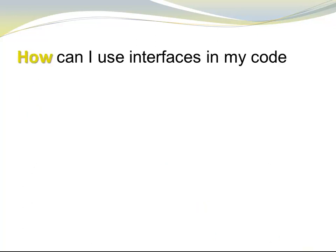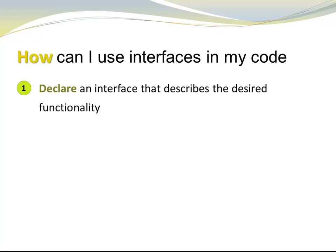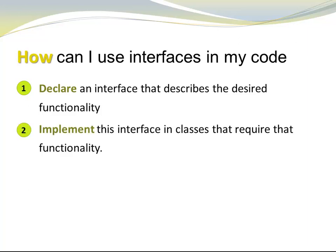At this point, you might wonder: how can I use interfaces in my code? There are three ways. You can declare an interface that describes the desired functionality. You can implement this interface in classes that require that functionality. And you can use an interface as a type.